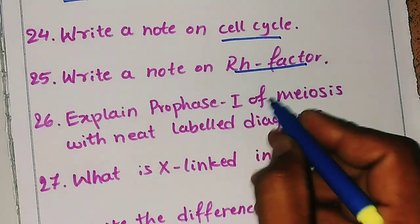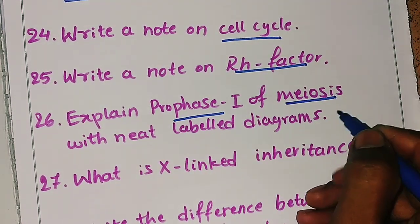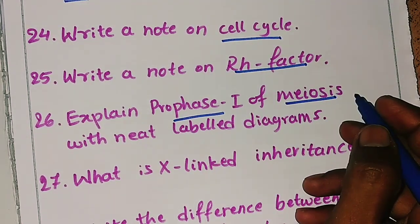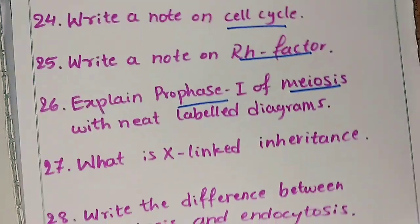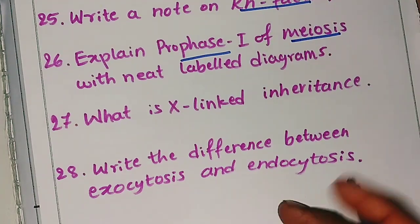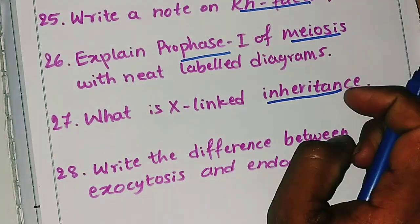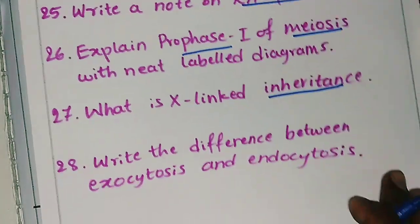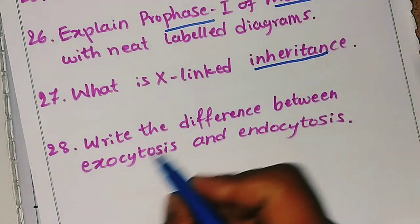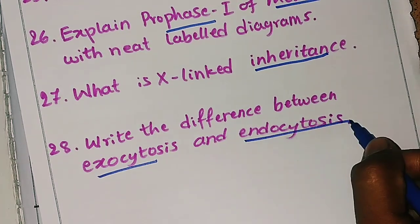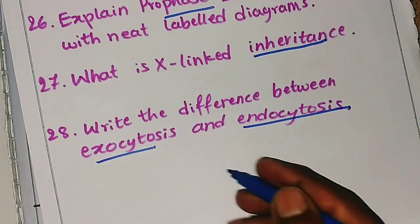The twenty-sixth question is: explain prophase one of meiosis with a labelled diagram — they specifically asked prophase one, so study the remaining concepts as well. The twenty-seventh question is: what is X-linked inheritance. The twenty-eighth and last important question is: write the difference between exocytosis and endocytosis.